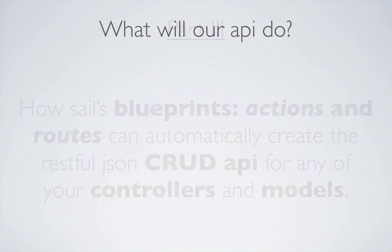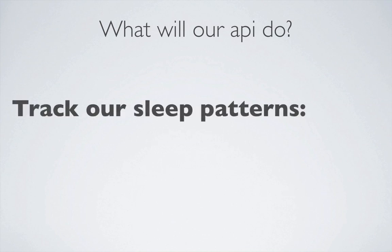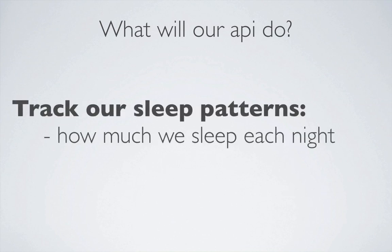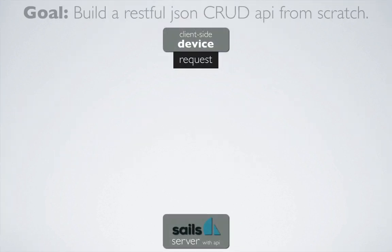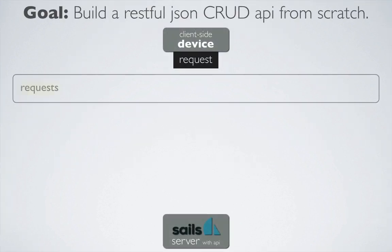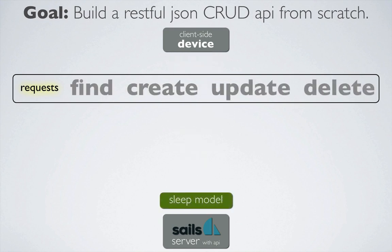Let's review what we're trying to accomplish. Our API will be used to access and update information that tracks our sleep patterns, including how much we sleep each night and the quality of that sleep. So we want the API to be able to respond to requests to find, create, update, or delete instances of our sleep model.